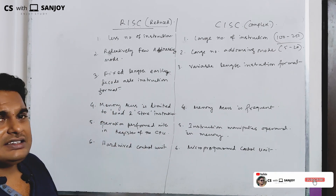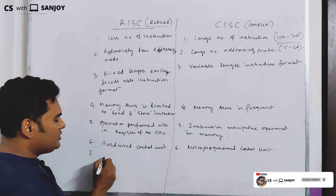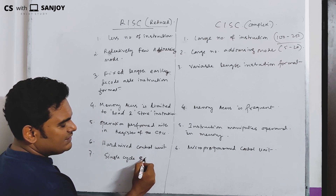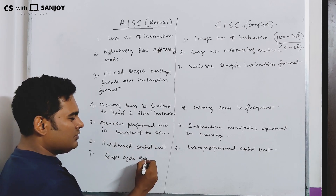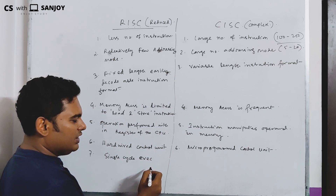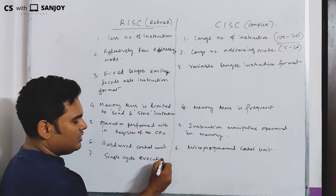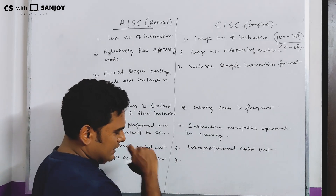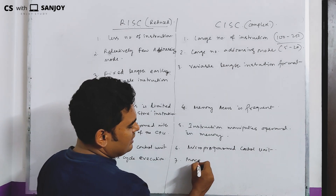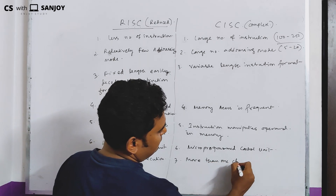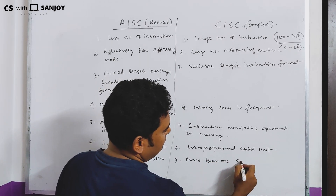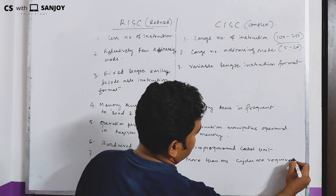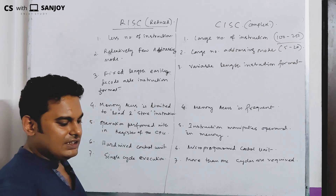RISC has fewer instructions but single-cycle execution. A single cycle is more than enough for execution. CISC has a large number of instructions and more than one cycle is required for execution.